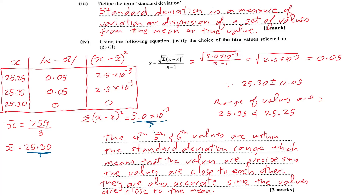The fourth, fifth, and sixth values are within the standard deviation range, which means the values are precise since they are close to each other. Precision looks at the closeness of data values to each other, while accuracy looks at how close the values are to the mean or to the true value.